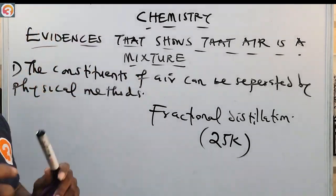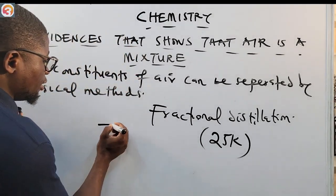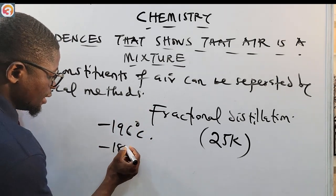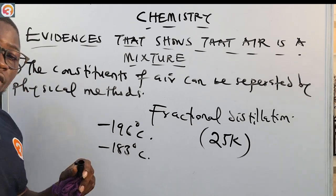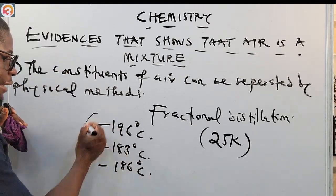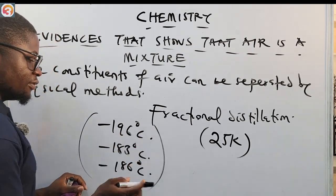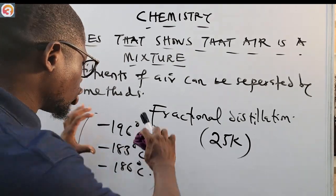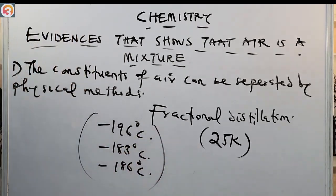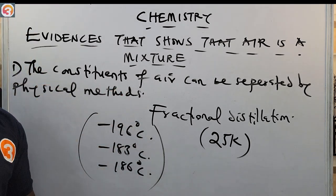Nitrogen has a boiling point of minus 196°C, oxygen has minus 183°C, and argon has minus 186°C. These are the boiling points of those three gases. They have close boiling points, so we can use fractional distillation to separate them. That is an evidence that air is a mixture of gases.